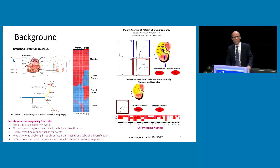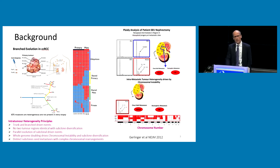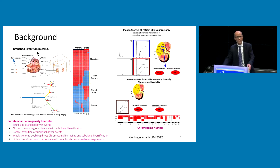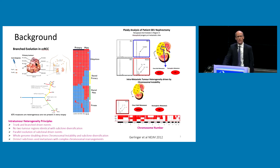The background of our work: in 2012 we published a paper showing the diversity and branched evolution of advanced stage renal cancers, showing that multi-region tumor sequencing led to the discovery of several core evolutionary principles. The first is that there are trunk and branch driver events — trunk mutations present in every tumor cell and branch mutations present in some cells but not others.